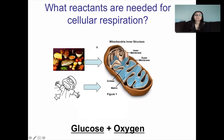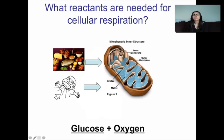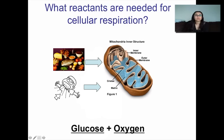What reactants are needed for cellular respiration to take place? Think about what you need to stay alive. When we did photosynthesis I said think about what plants need — here you're thinking what do you need? Glucose from the foods that we eat — that's how we get our glucose. And oxygen — you can't live without oxygen, and you can't live without food either. Both of those are needed for cellular respiration. When you eat food and breathe in oxygen, the glucose and oxygen get sent to your mitochondria for cellular respiration to take place.